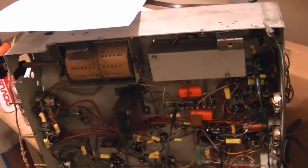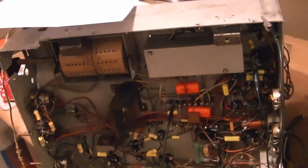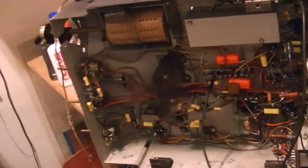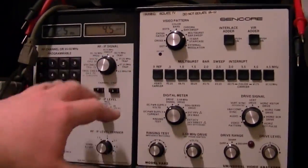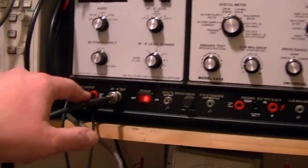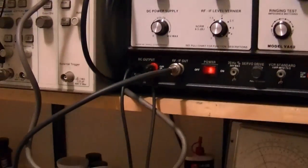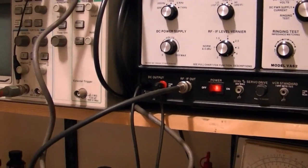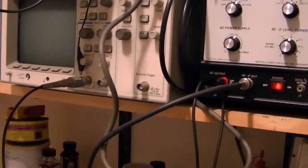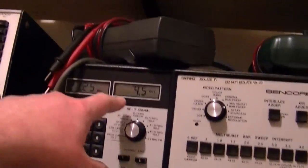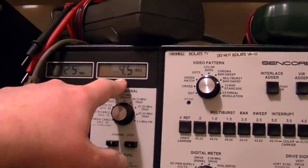I'm going through the alignment procedure now which is pretty straightforward on these Admirals. You don't even need a sweep generator, just an accurate RF generator so I'm using the VA-62 which also has a floating DC supply, which is handy because you're supposed to connect negative 4.5 volts to the AGC bus. They even provide you with a digital meter here. So 4.5 volts, got that clipped into the points they indicate.